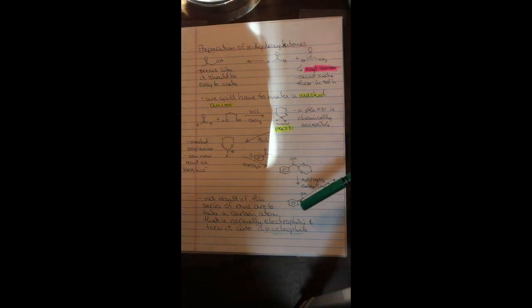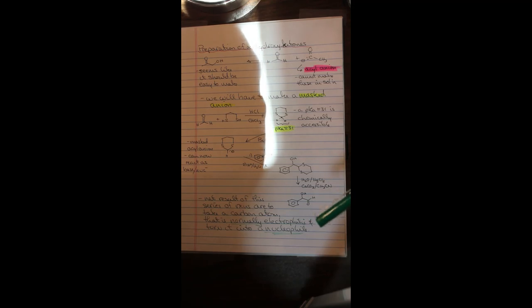Now in the past, the thioacetals, we've always treated with raney nickel and hydrogen. And what this has done has basically made the sulfur and carbonyl group disappear. In this particular case, we're going to reverse the thioacetal formation by treating it with water, mercuric chloride, calcium carbonate, and acetonitrile. And that will generate the alpha hydroxy carbonyl system that we're working towards generating. So what we've done in this reaction is we've essentially turned a carbon that is usually very electrophilic into a nucleophilic species, which is pretty cool.